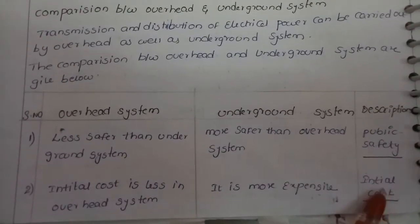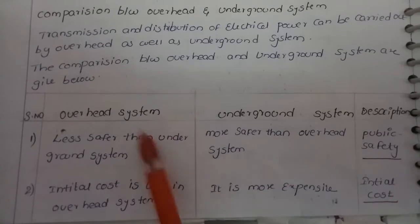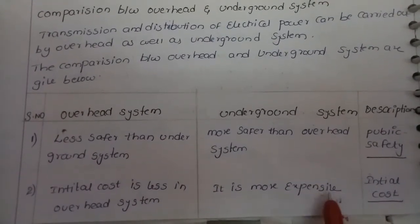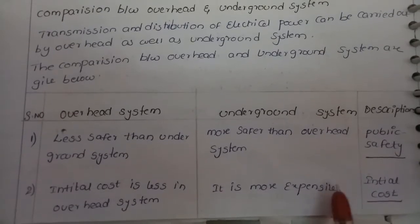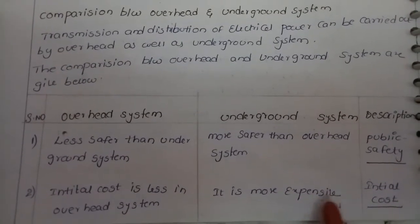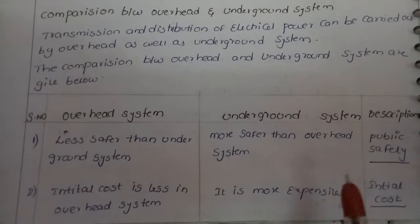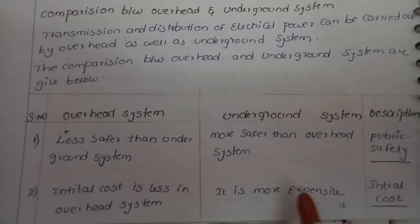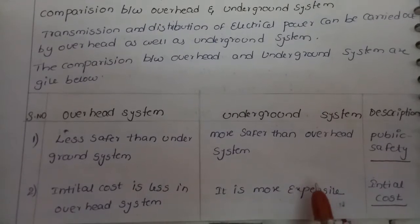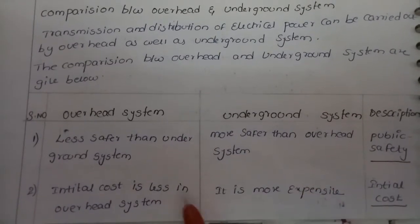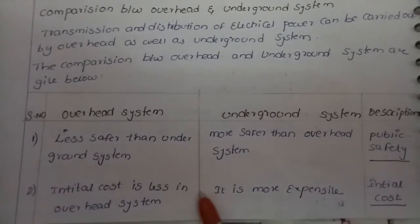Regarding initial cost, overhead systems have less initial cost. Underground systems are more expensive because we have to dig a channel, construct the cables, place the cables, and provide insulation. Therefore the underground system is costlier — approximately 10 times more costly than the overhead system.